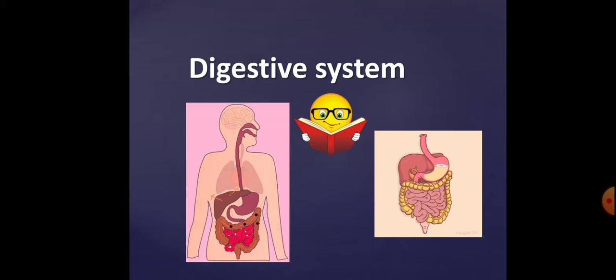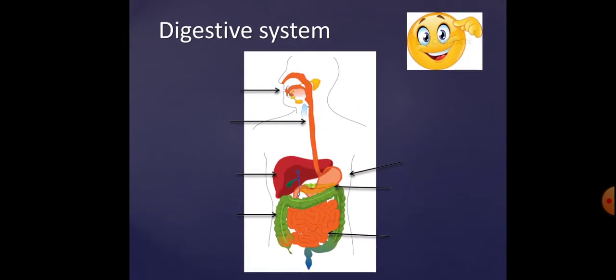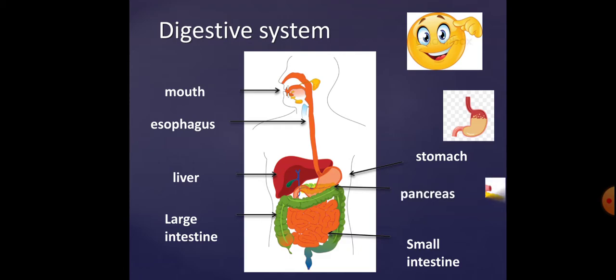Let's see how our digestive system looks from inside. It starts with the mouth, then the esophagus, which looks like a long tube, then the stomach, small intestine, large intestine, and two extra parts: the liver and pancreas. The pancreas looks like a plant leaf. Let's now talk about each part in full detail.